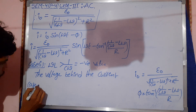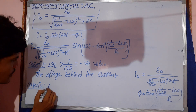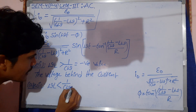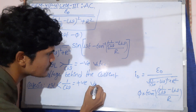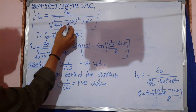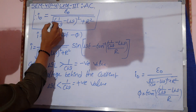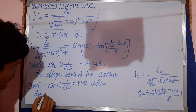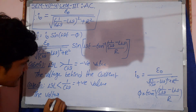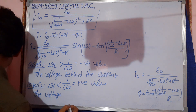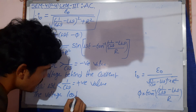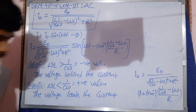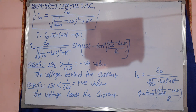Case 2: omega L is less than 1/Cω, so that means positive value. So omega L less than 1/Cω with R increasing means positive value. The voltage leads the current.